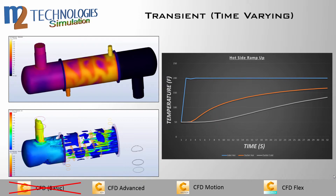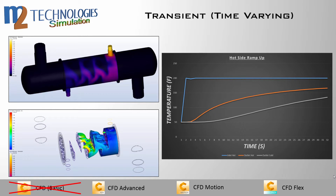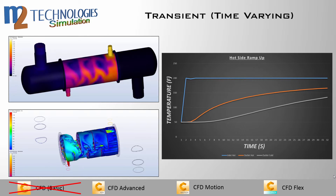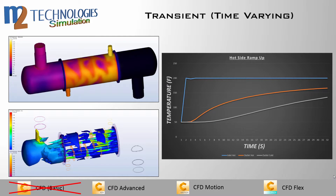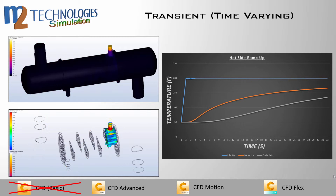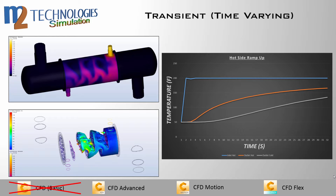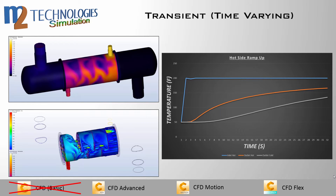In the case of transient analysis, an accurate time history is developed and the solution can be studied at any point in time. Systems can change over time — flow rates, temperatures, heat flux, and more can all be varied throughout the event. Animations and graphs of the event can be output.